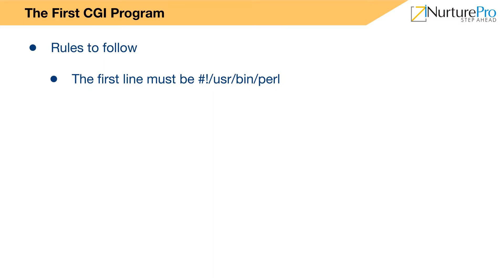The first line of your CGI program must be the content-type header: Content-Type: text/html, and the print statement must have two \n characters — the first to terminate the current line and the second to produce the required blank line between the CGI header and the data.